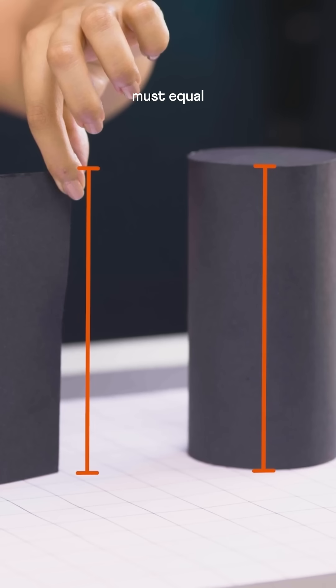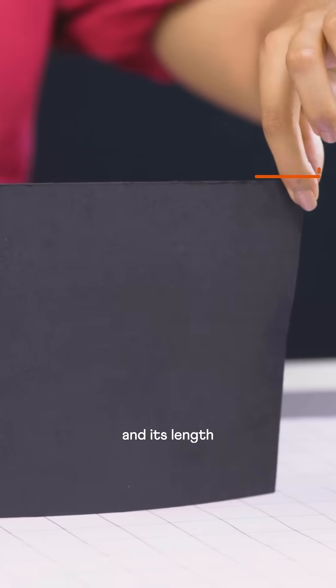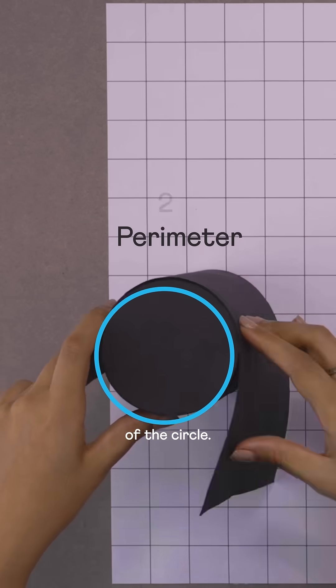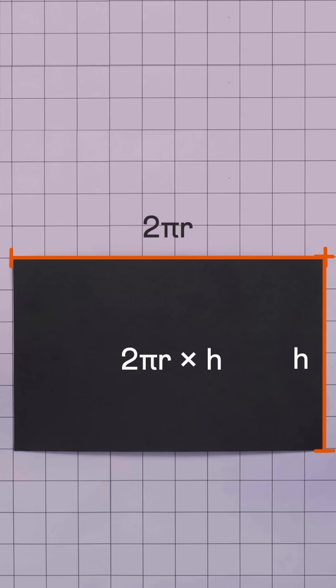Its width must equal the height of the cylinder, and its length equals the perimeter of the circle, that's 2 pi r. So its area is 2 pi r times h.